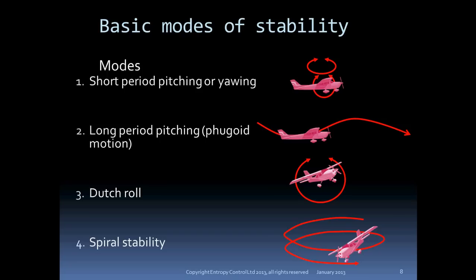Talking about the modes: the short period oscillation is what you get if you kick the rudder or push the stick — the aircraft very rapidly returns to forward flight. The motion has a very short period and is very heavily damped. The second mode is a long period oscillation in speed and altitude called the fugoid. Then there is Dutch roll, a motion in yaw and roll named after the rolling gait of a skater. Finally, we have spiral stability, which is the ability to return to straight flight after dropping a wing.